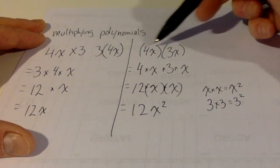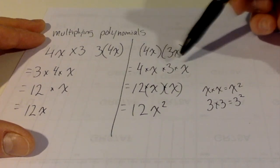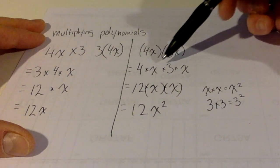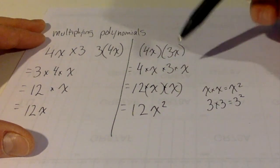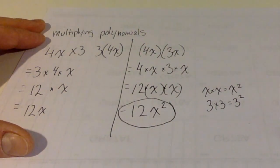So 4x times 3x, we break it apart into the different parts that it has, then we simplify by going with the numbers first and then the variables second to end up with our final answer of 12x squared.